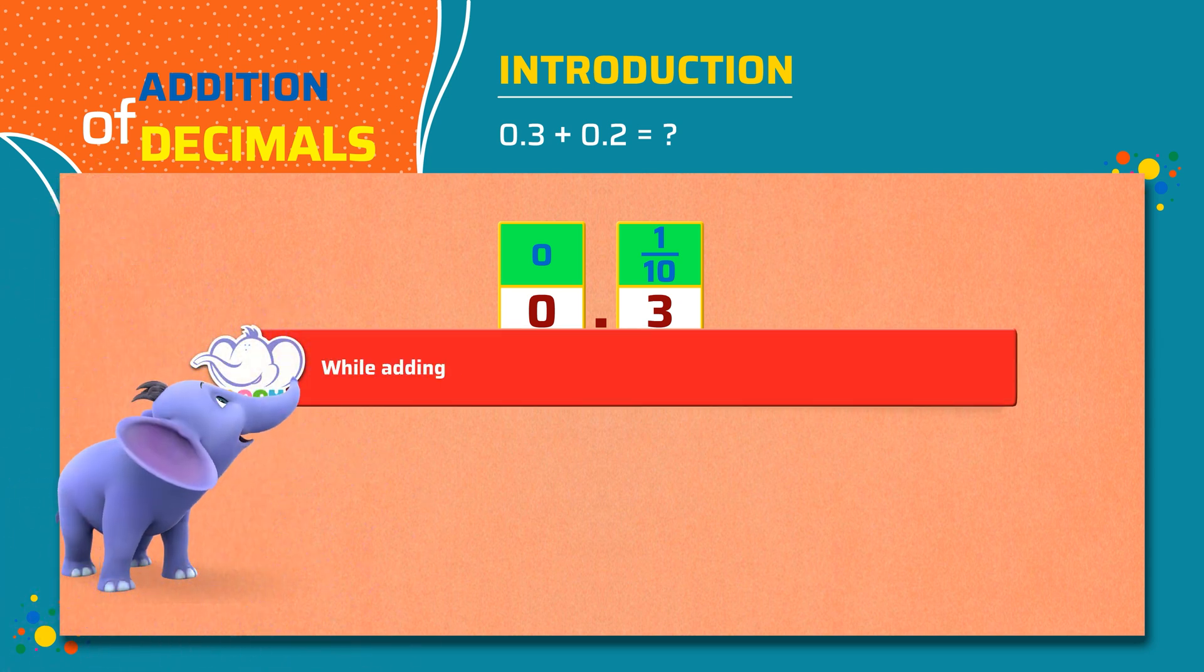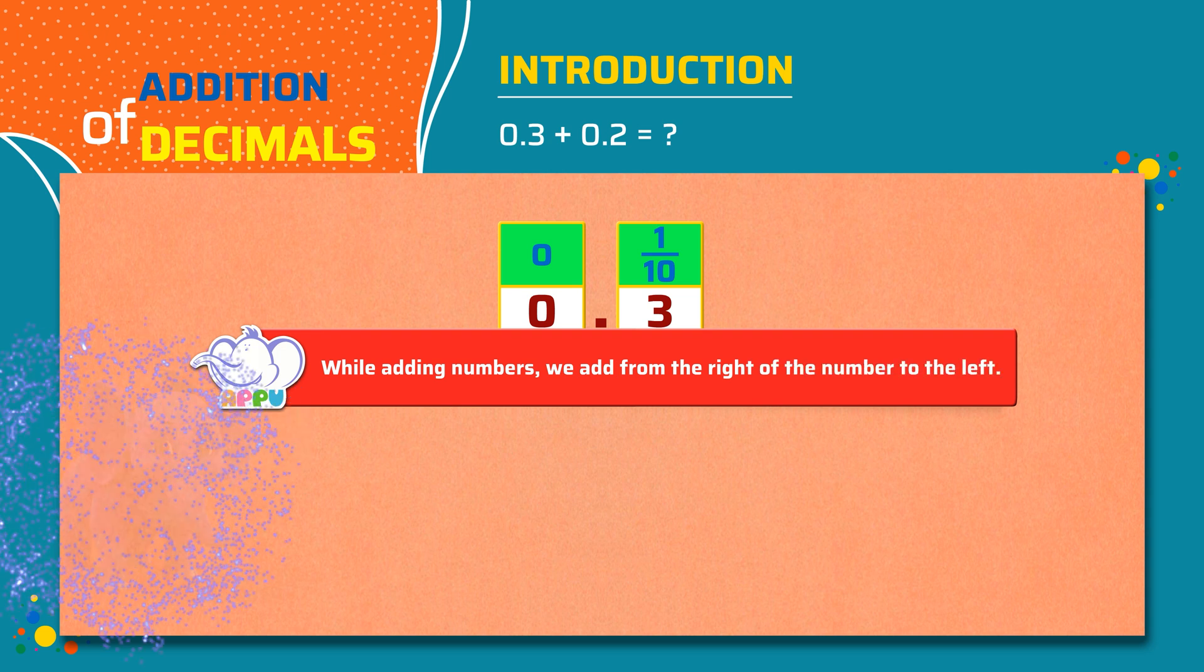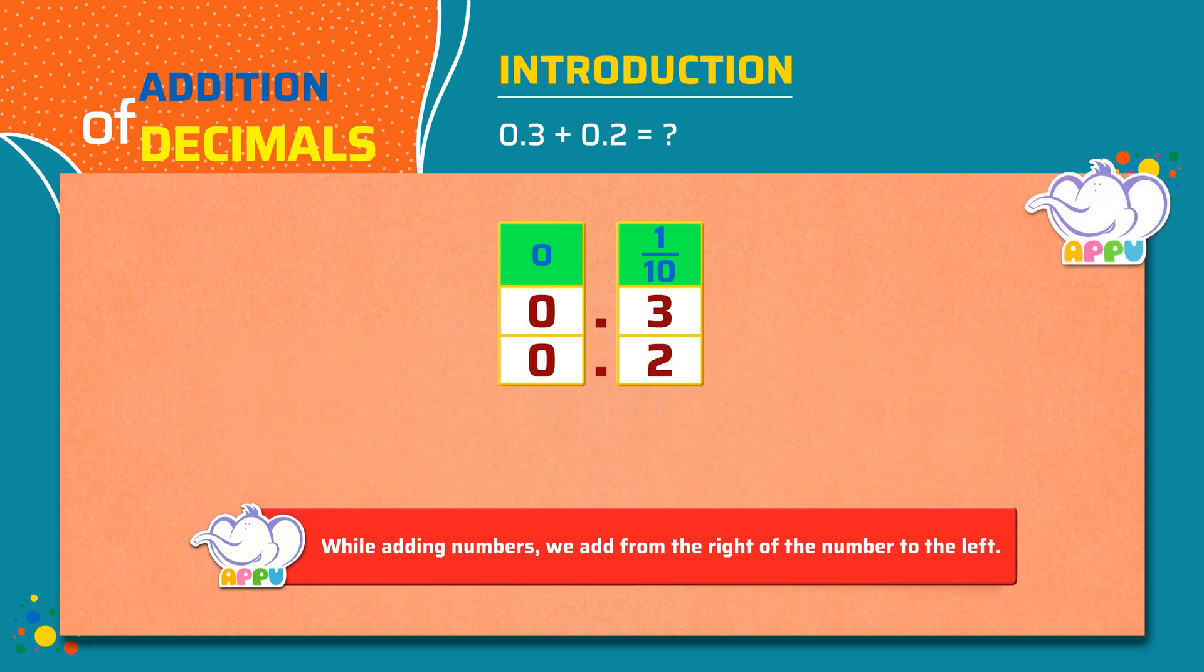While adding numbers, we add from the right to the left. Now we add the tenths. We get 5 tenths. We place the decimal point. We add the ones. We get 0 ones. The answer is 0.5.